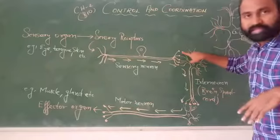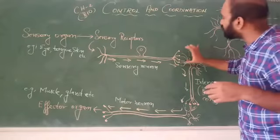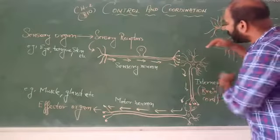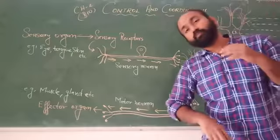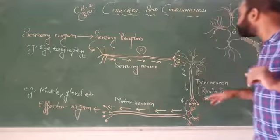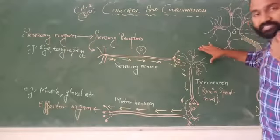Then from the nerve end, neurotransmitters are released and it actually communicates with the next neuron, the interneuron which is present in your brain or spinal cord. Now this interneuron is a typical neuron because this shape is the same shape which we have already studied.